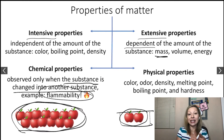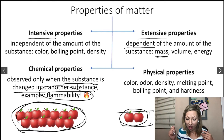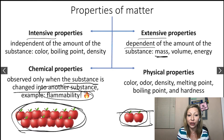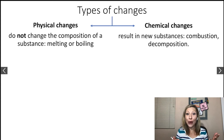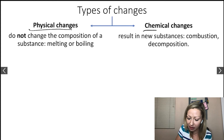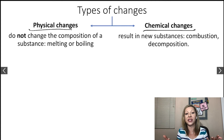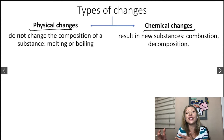So we have intensive and extensive properties, and chemical and physical properties. Now let's look at the types of changes that matter can undergo: physical changes and chemical changes. In the case of physical changes, we are not going to change the composition of the substance — at the beginning and end of the change, we are going to see the same type of molecule.